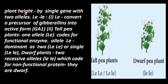A plant's height is defined by a single gene, expressed by a single gene. That gene has two alleles — we will call them capital T and small t — representing dominant and recessive alleles.